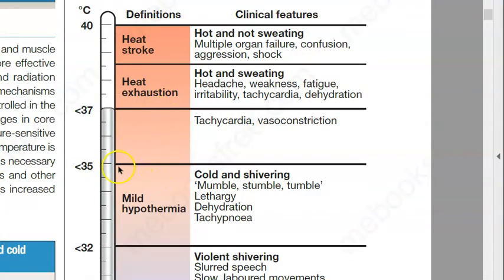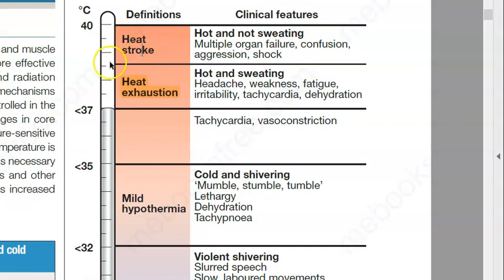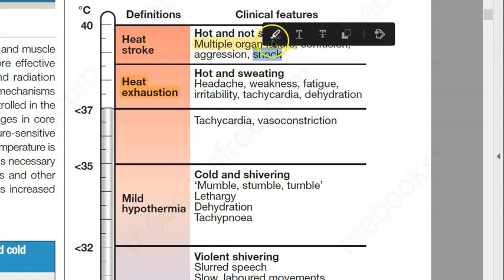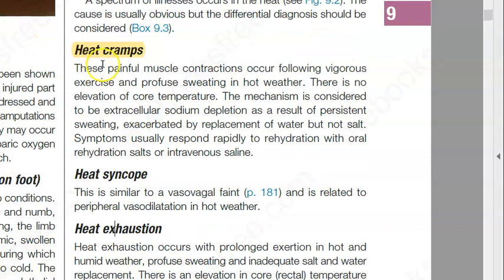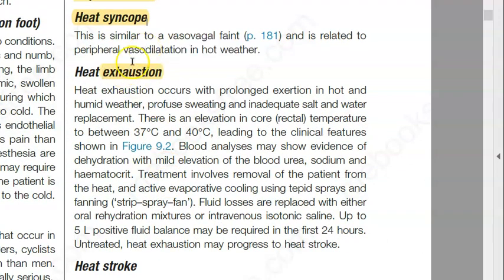As temperature increases beyond 37°C, first you become heat exhausted, then you get heat stroke. Heat stroke occurs around 39–40°C with multiple organ failure, confusion, aggression, and shock. Along the way, heat cramps can happen, and heat syncope — you can just faint out, very similar to a vasovagal faint. For cramps, rehydration with rehydration salts is recommended, not just water.